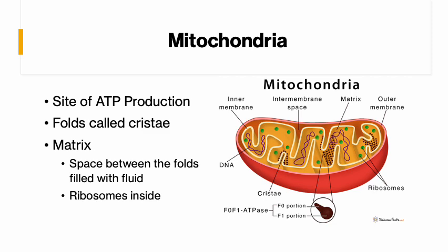The mitochondria is referred to as the powerhouse of the cell because it is where ATP production occurs — when we make energy with our cells, it happens in the mitochondria. The mitochondria has folds inside called cristae, and that's where the actual ATP production happens. There are also ribosomes inside it. The mitochondria has its own mitochondrial DNA because it can split and make more of itself if the cell needs more energy production sites.